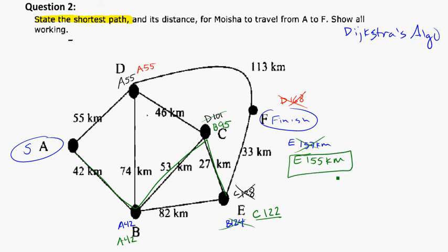So don't forget to actually write out what the route is. That's A, B, C, E, F, at a total distance of 155, and don't forget your units, in this case kilometers.